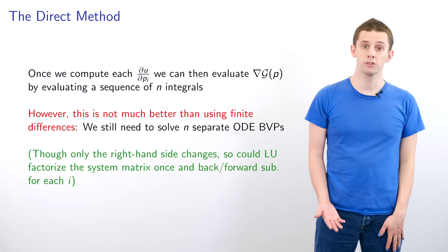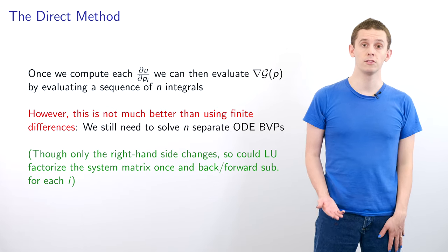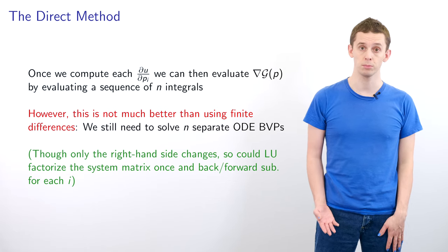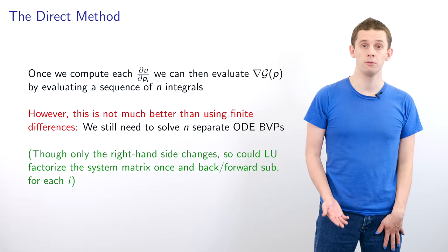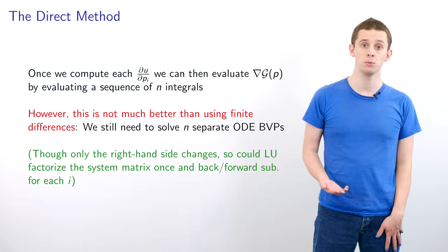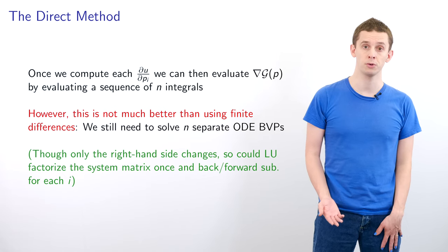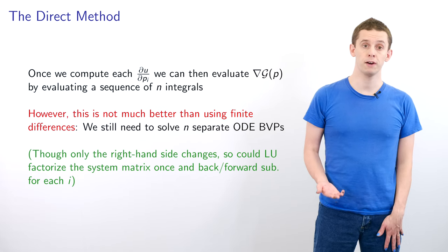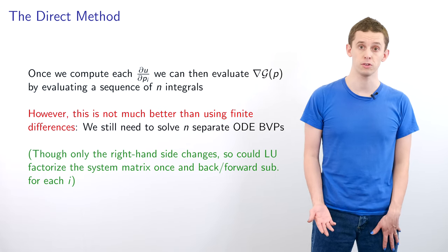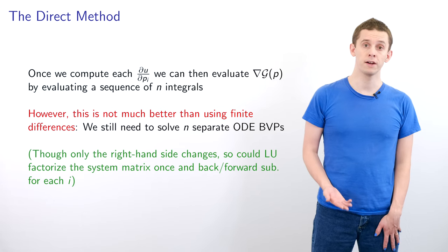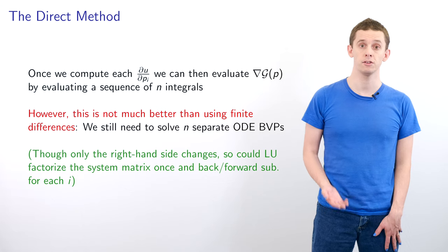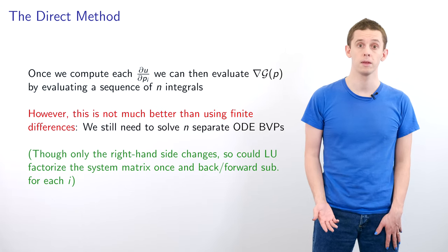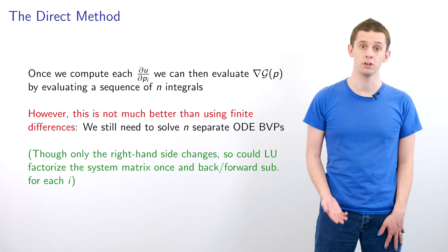On the surface this might not seem like much of an improvement since we still need to solve n separate ODE boundary value problems. However this can result in substantial computational savings. The only thing that changes is the right hand side, so we get substantial vectorization savings. We could LU factorize our system matrix once and then for each component perform backward and forward substitutions that are cheap. Another advantage is that we no longer have to choose a step size h, so we no longer have discretization errors associated with h.